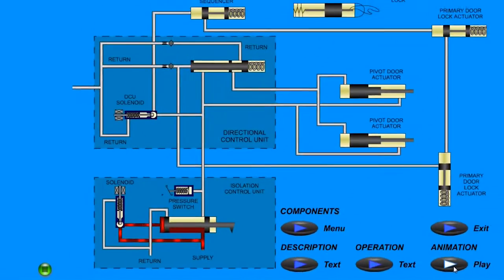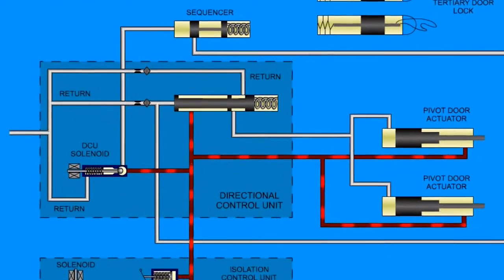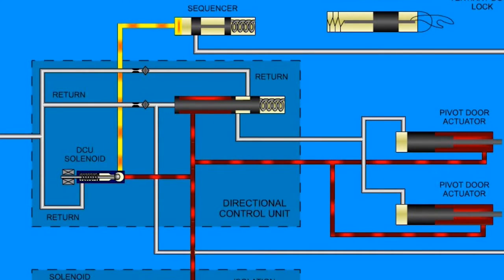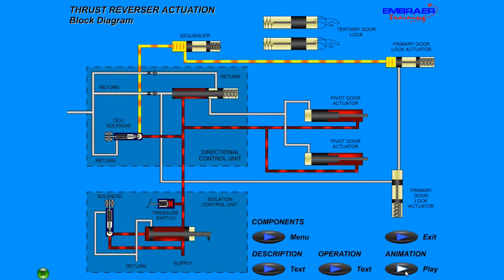The DCU solenoid and pivot doors will then overstow. Once they overstow, they will send the pressure back to the DCU, which will send it up to the lock sequencer and open the primary door lock actuators.